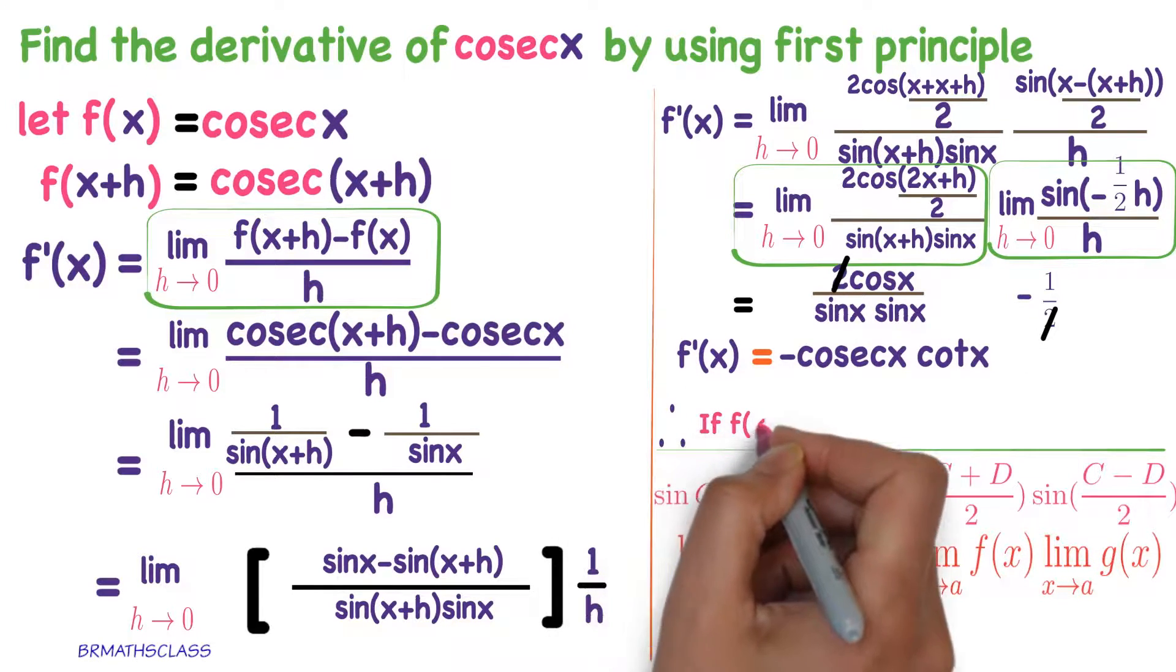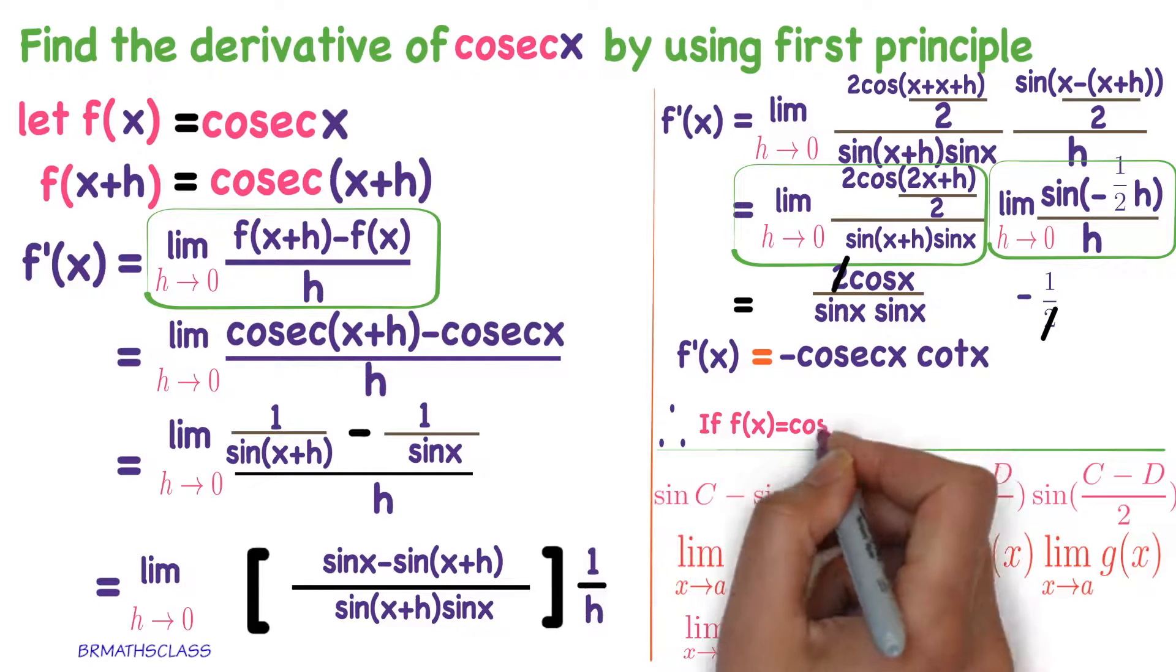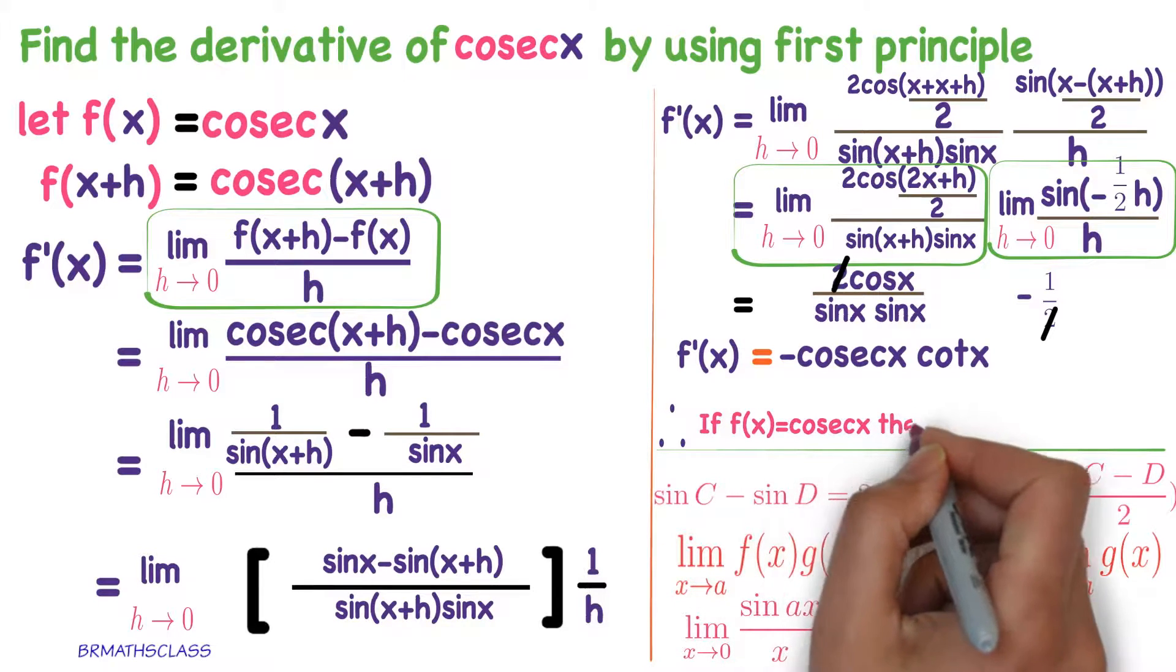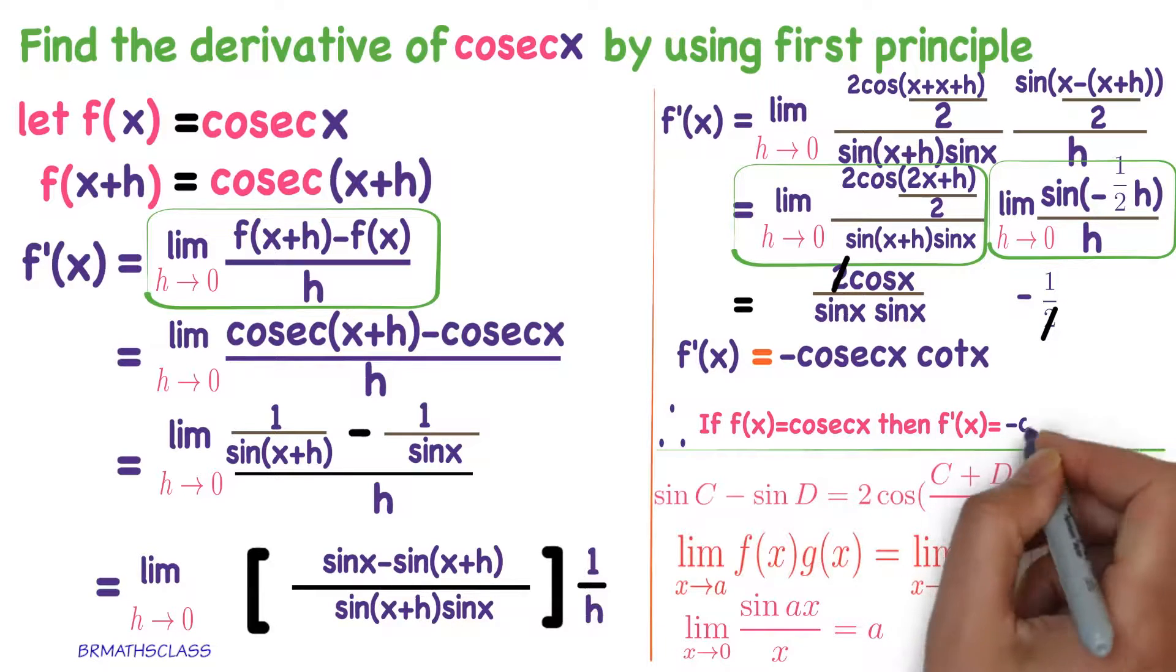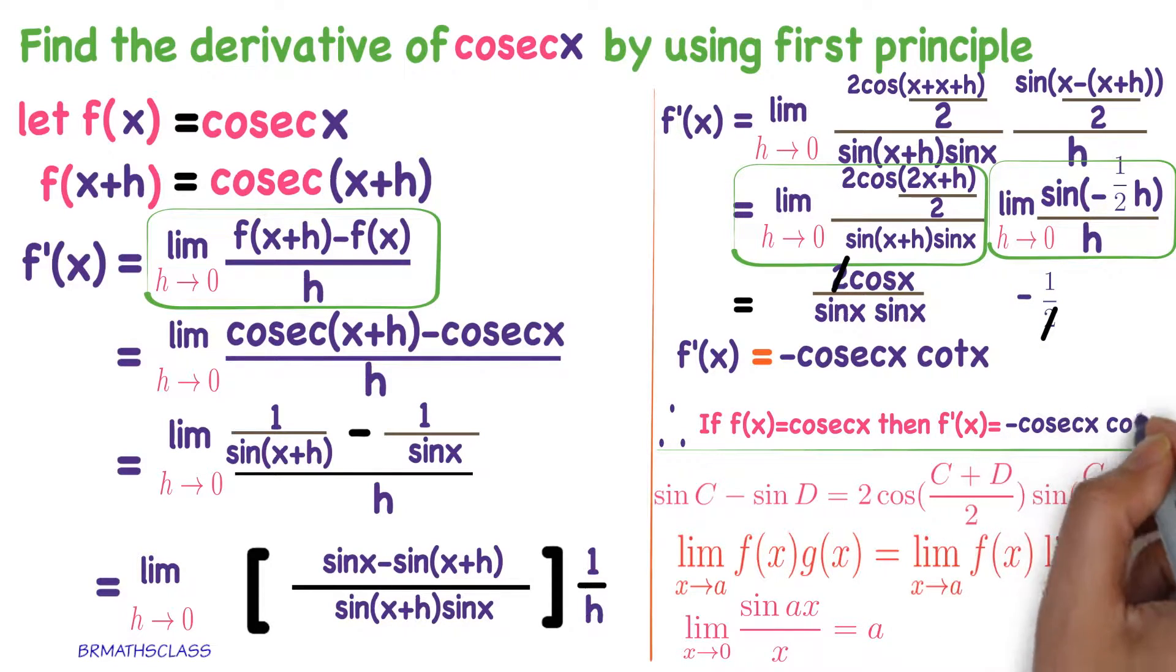So, conclusion, if f of x is equals to cosecant x, then its derivative f dash of x is minus cosecant x into cot x. From now onwards, we take this as a formula, derivative of cosecant x is minus cosecant x into cot x.